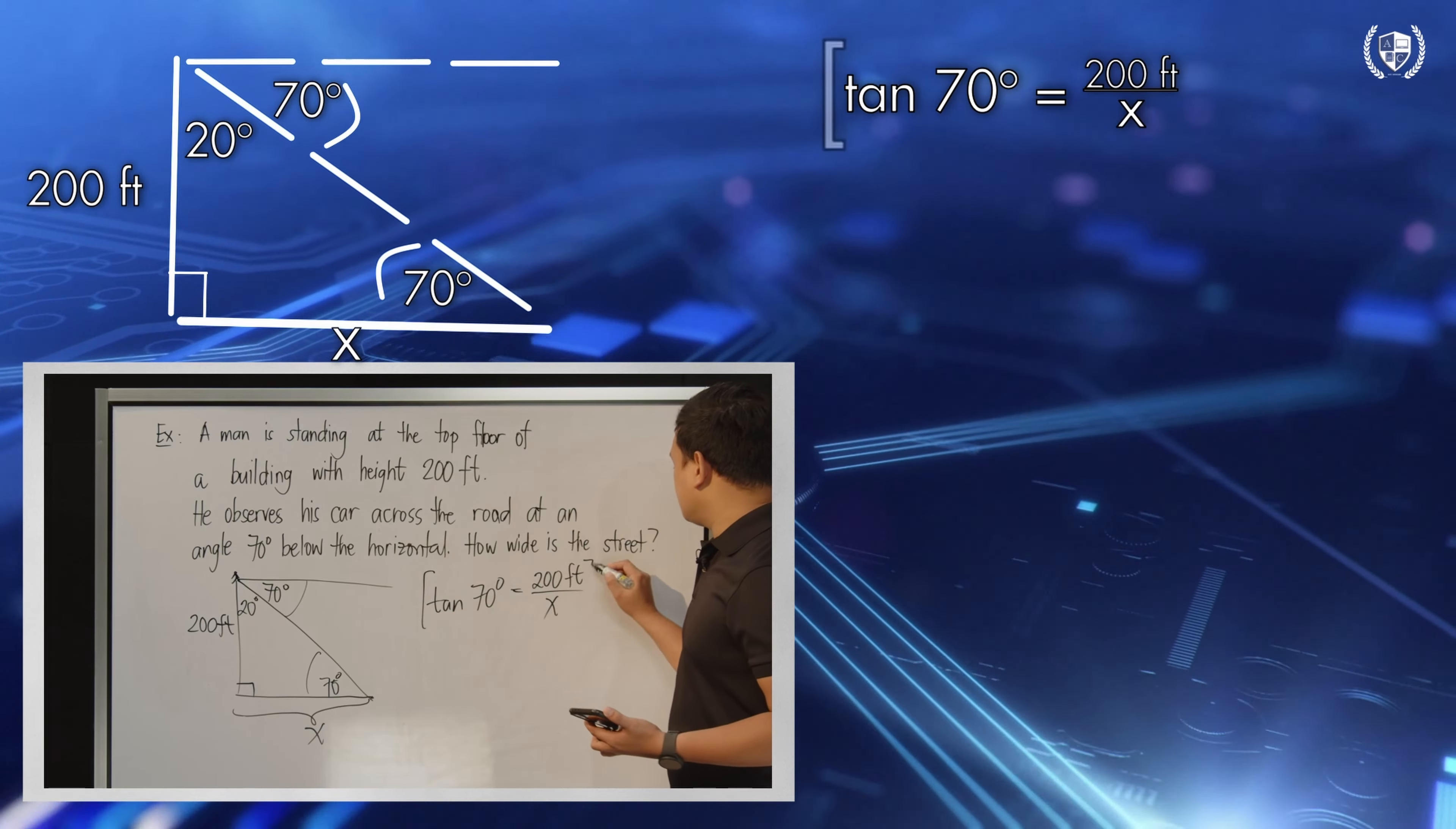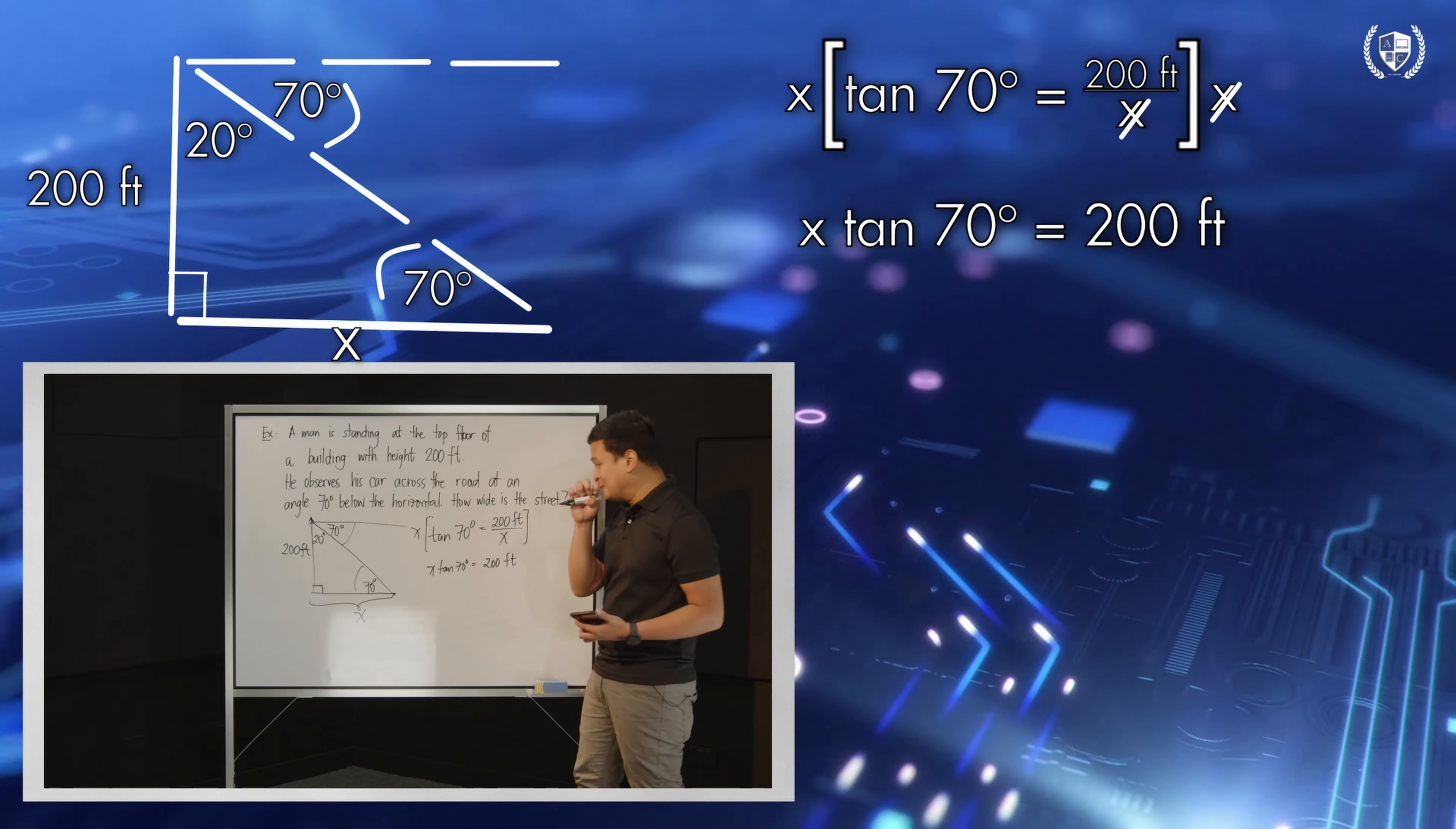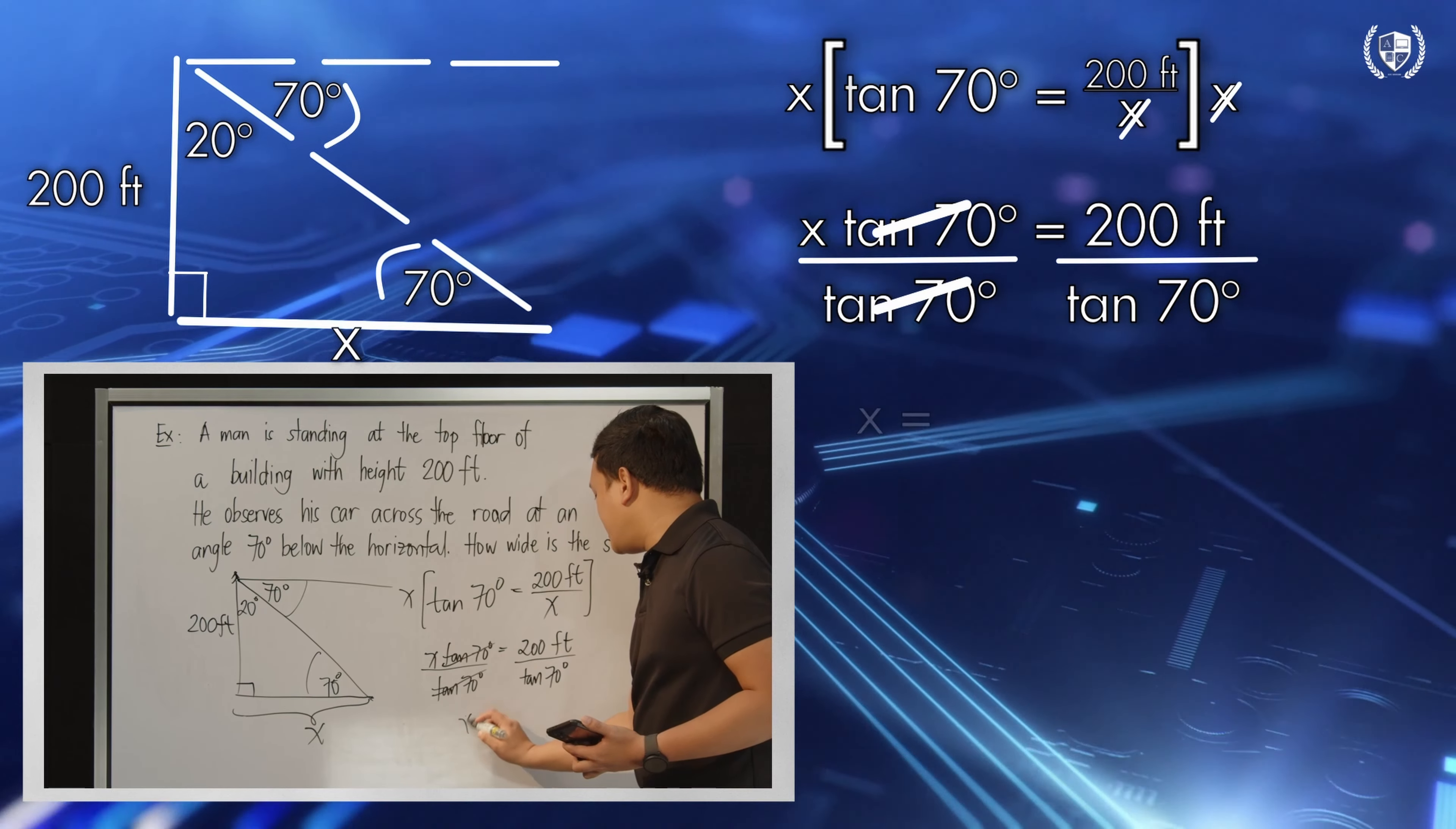Multiply the equation by x. So, I'll get x tangent 70 degrees equals 200 feet. And the x cancels on the other side. Dividing both sides by tangent 70 degrees, the tangent 70 degrees cancels, and I'll be left with x equals...